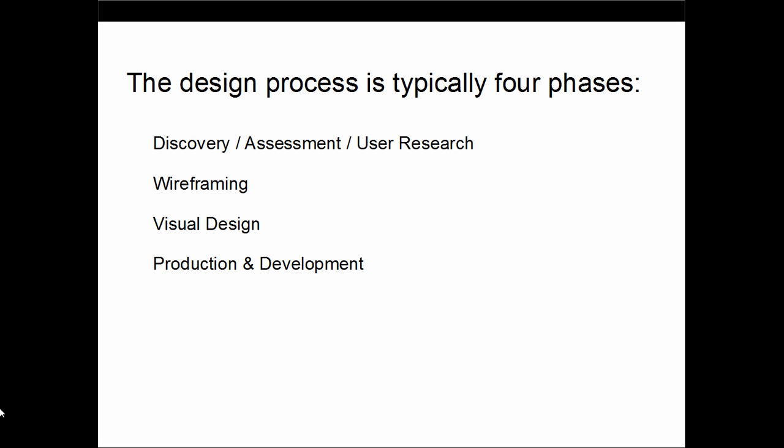The design process is typically broken into four phases: the first is discovery, assessment, and user research; the second is wireframing; the third is visual design; and the fourth is production and development.